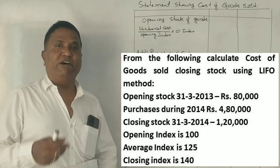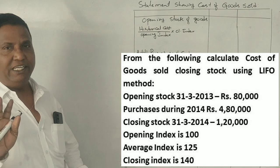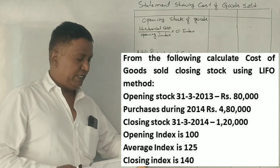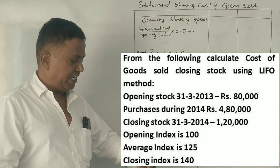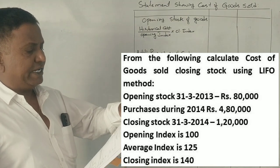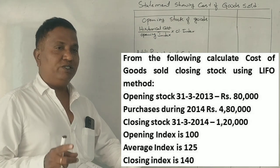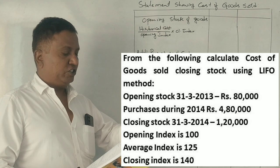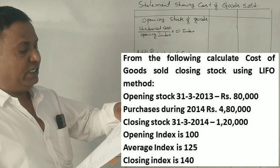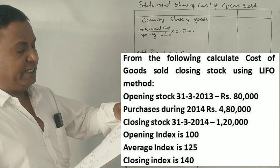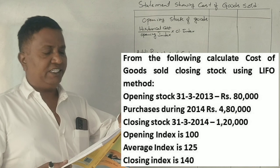Calculate cost of sales and closing stock using the LIFO method. Stock on 1-4-2030, purchases, stock on March closing. Price index: opening is 100, price index closing is 140, and average is 125.